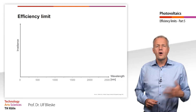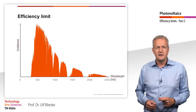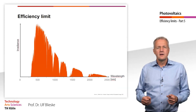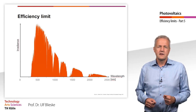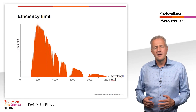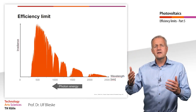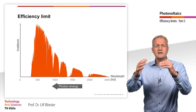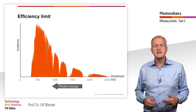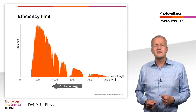In the last tutorial, you already got to know the AM1.5 spectrum, which is shown here again. The spectrum is typically plotted versus the wavelengths. The energy of a photon is inversely proportional to the wavelength. Light with a small wavelength has a high energy. Light with a high wavelength has a low energy. We can also express the photon energy needed for the photoelectric effect as a wavelength, and we have called this the cutoff wavelength.